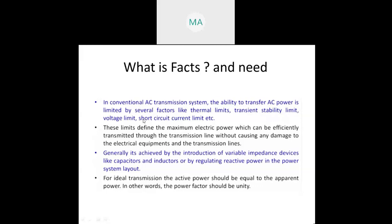Based upon the transmission line distance from load center to generating station, sometimes we have more kilometers. In those cases, voltage drop will occur due to thermal effects and weather conditions, which reduce the voltage. These limits define that whatever the power efficiency will be decreased. To increase efficiency without any damage, we are going to use the transmission effectively by using FACTS devices.